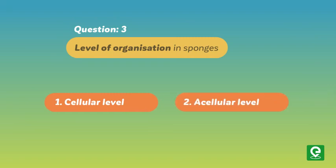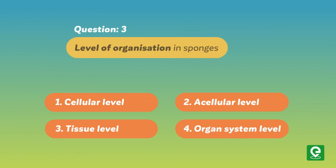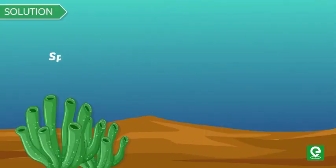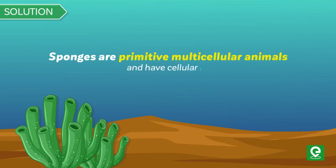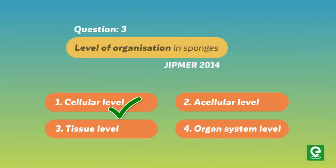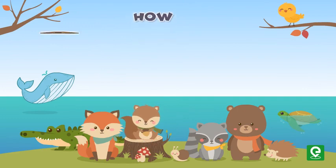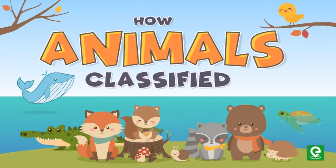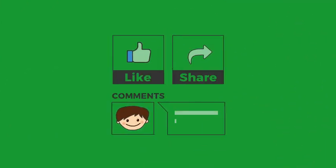Question 3: Level of organization in sponges — (1) cellular level, (2) acellular level, (3) tissue level, (4) organ system level — JIPMER 2014. Solution: Sponges are primitive multicellular animals and have cellular level of organization. Hence option 1 is correct. This video concludes how animals are classified; please visit our next video to learn more.